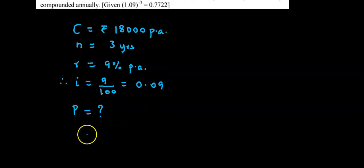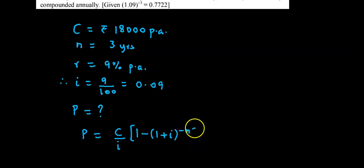We have been asked the present value, so we apply the formula for present value. Now we know that P equals C upon i into 1 minus 1 plus i raised to minus n.